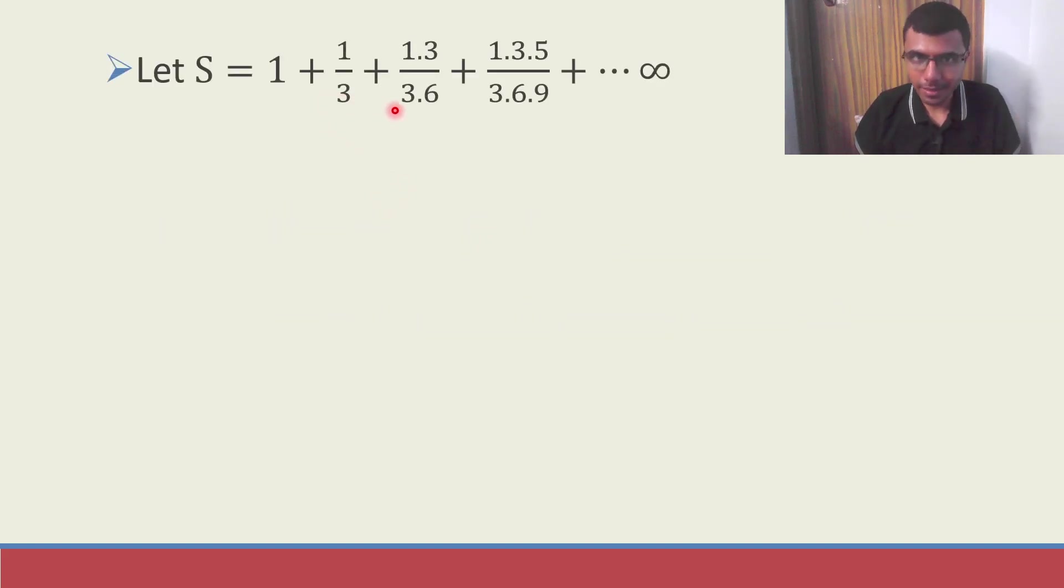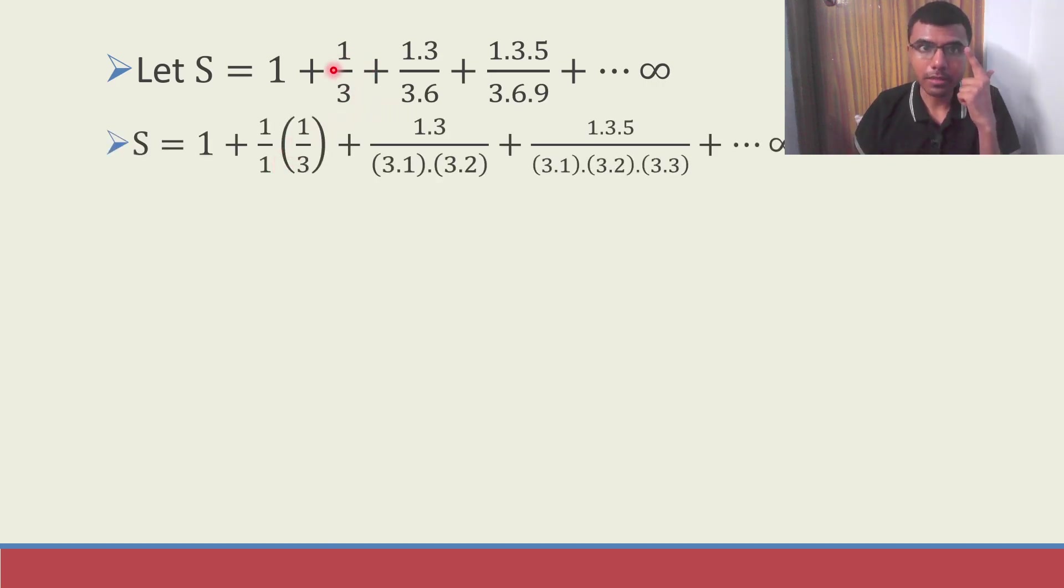Now I'm going to take the sum as S. Next, this sum, I'm going to write it as 1 by 1 into 1 by 3. Why am I writing it like this? Because I need factorials.